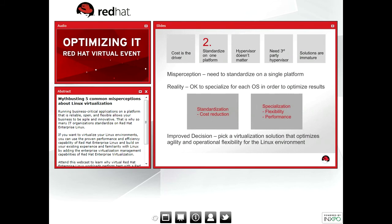The second misperception is that we need to standardize on a single virtualization platform. The shift of priorities from cost to flexibility has a real impact on this decision. A cost reduction focus strategy — standardization made sense. With new technology, new skills, and new risks, having a single platform was the right approach. But when agility and flexibility is the strategy, then specialization is a more appropriate approach.